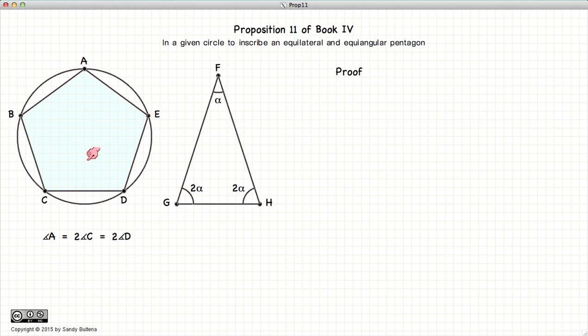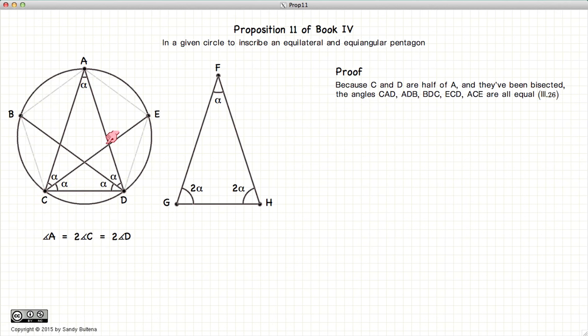Now to prove that this is what we say it is, let's look at our angles for a moment. Because we bisected the angle at C, and the angle at C was twice the angle at A, this angle here, ACE, is equal to angle at A, and similarly for all the rest of them. So all of these angles are equal.